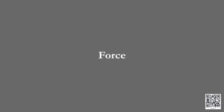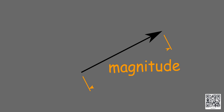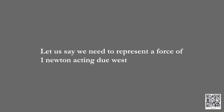How do we represent a force so that both its magnitude and direction are shown? A force is represented by a straight line with an arrowhead. The length of the line is proportional to the magnitude of the force, and the arrowhead represents the direction. For example, to represent a force of 1 Newton acting due west, we choose a scale where 1 centimetre represents 1 Newton, draw a line of 1 centimetre along the east-west direction, and the arrow should point west. This is how we represent quantities that have both direction and magnitude.